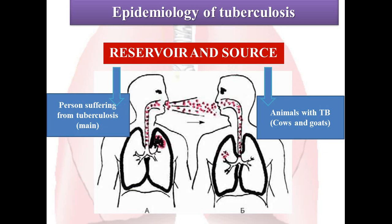Mycobacterium tuberculosis is carried in airborne particles called droplet nuclei, 1 to 5 microns in diameter. Infectious droplet nuclei are generated when persons with pulmonary TB disease cough, sneeze, shout, or even sing. By coughing, sneezing, shouting, or singing, they expel about 7 billion mycobacteria per day, and by a single cough or sneeze, they expel about 60,000 droplets and droplet nuclei.